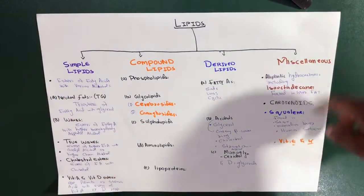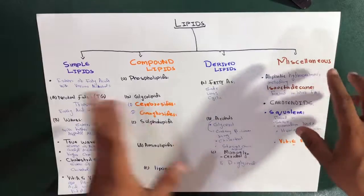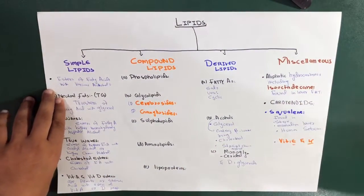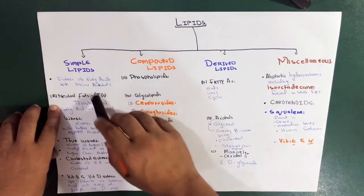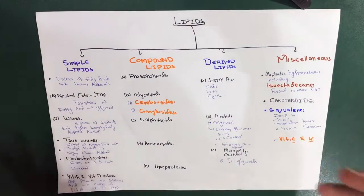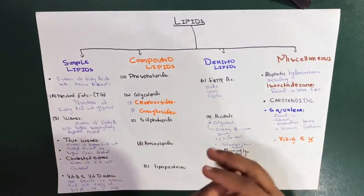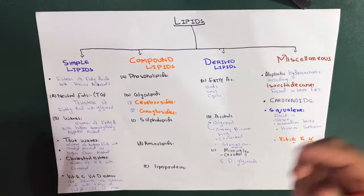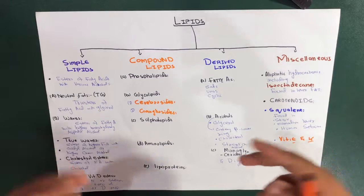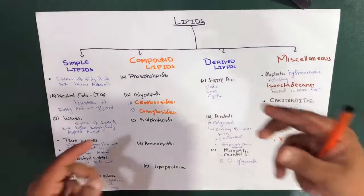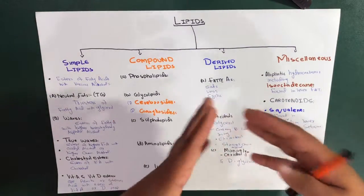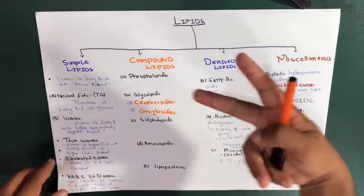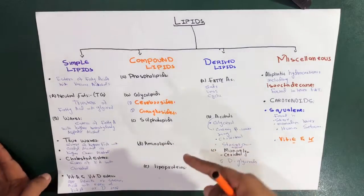In the case of miscellaneous, we have aliphatic hydrocarbons containing different things — we'll talk about those in the final section. Now let's start with simple lipids. Simple lipids are esters of fatty acids with various alcohols. We divide them into two groups: neutral fats and waxes.